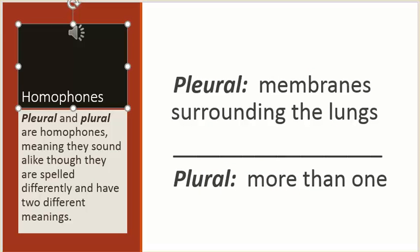Homophones. Pleural and plural are homophones, meaning they sound alike, though they are spelled differently and have two different meanings. Pleural, P-L-E-U-R-A-L, refers to membranes surrounding the lungs. Plural, P-L-U-R-A-L, means more than one.